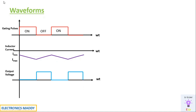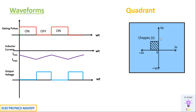This waveform is very helpful for deciding the quadrant of operation. Current is always negative and output voltage is always positive, which corresponds to the second quadrant. That is why the Type B chopper is also called a second quadrant chopper, a step-up chopper, or boost operation of the chopper.